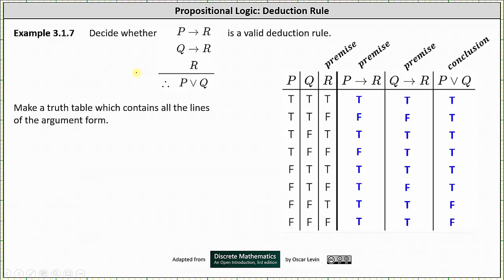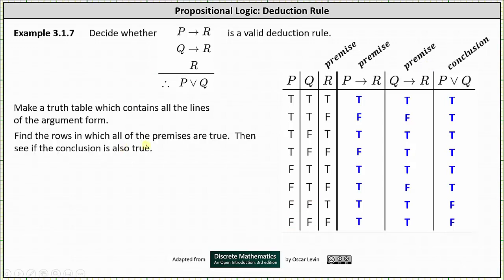Now we find the rows in which all the premises are true and check if the conclusion is also true. Notice the premises are in columns three, four, and five. All the premises are true in row one, row three, row five, and row seven.